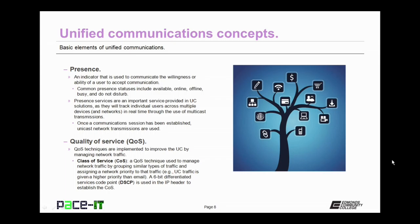Once a communication session has been established, multicast communication is dropped and unicast network transmissions are used. Another UC concept you need to grasp is quality of service. Quality of service techniques are implemented to improve unified communication by managing network traffic. The most common implementation of quality of service is class of service, or COS. COS is a quality of service technique used to manage network traffic by grouping similar types of traffic and assigning a network priority to that traffic — for example, unified communication traffic is given a higher priority than email. A 6-bit differentiated service code point, DSCP, is used in the IP header to establish the class of service.